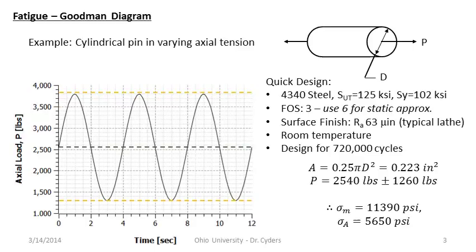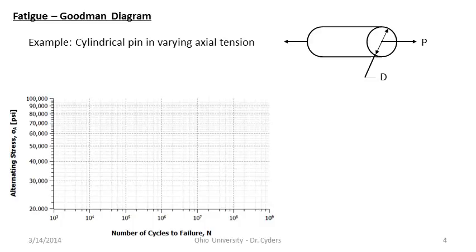If you want to design for a given number of cycles with an elevated mean stress, you have to reduce the load. We're using 4340 steel. We started with a factor of safety of 6 for our static approximation, and now going forward we'll use a factor of safety of 3.